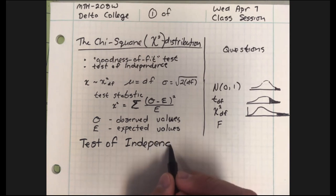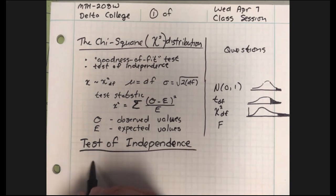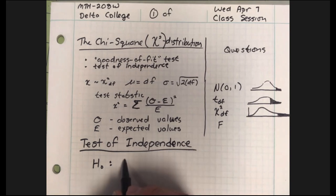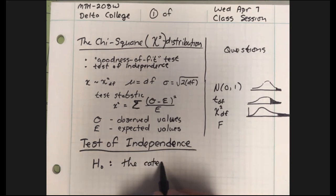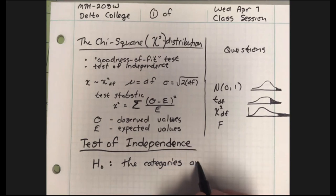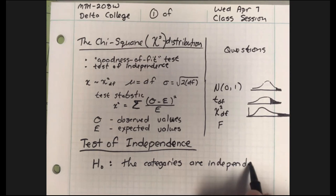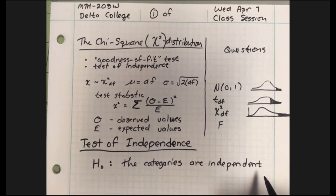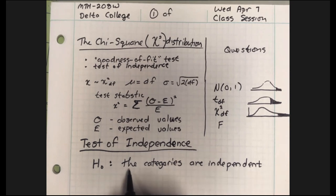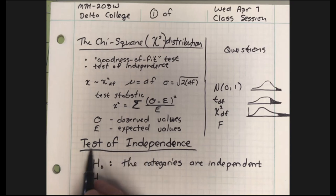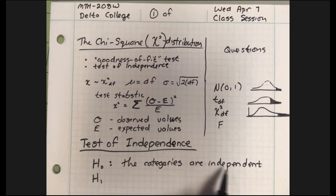The hypotheses when you're testing for independence: your default assumption is that the categories or classes being described are independent. That's going to be your base position. If someone says the color car you drive is dependent on your age, you're going to say, prove it to me. Give me some information that proves that. You're going to assume those two things are independent until someone shows you significant evidence otherwise. In a test of independence, you assume first the null hypothesis — the categories are independent — unless someone brings you significant evidence that they depend on each other.